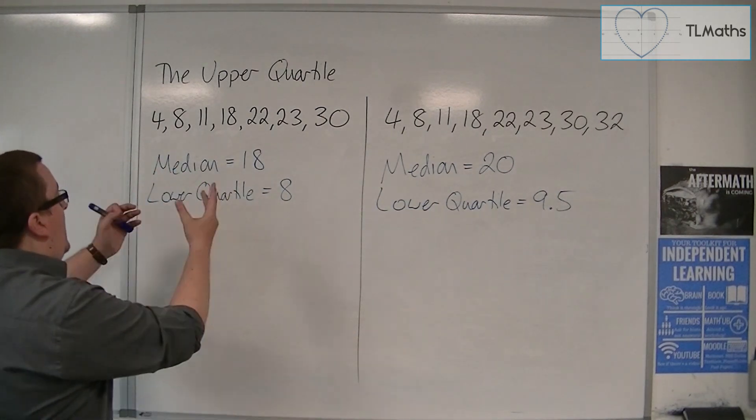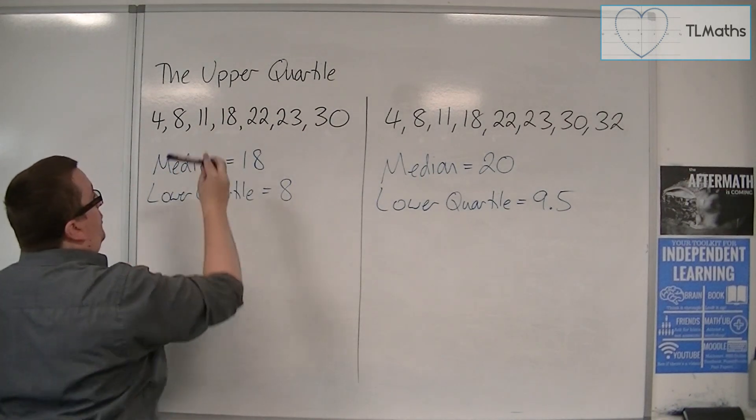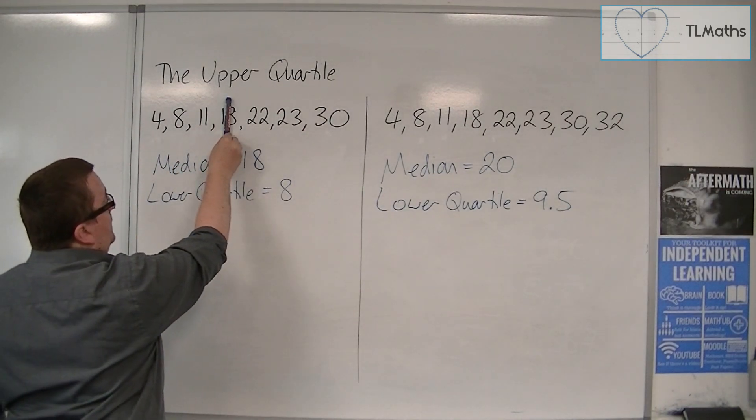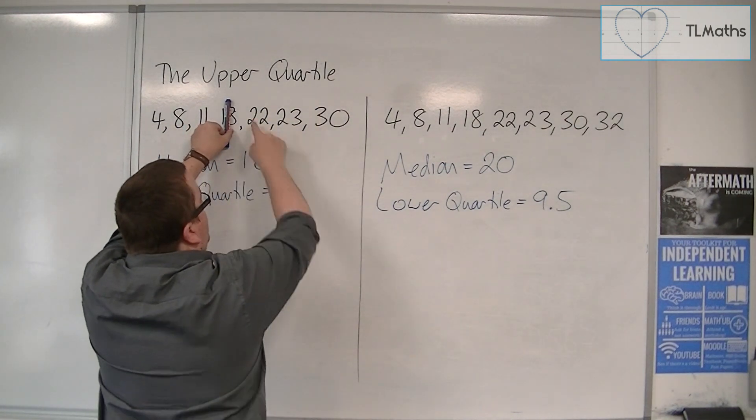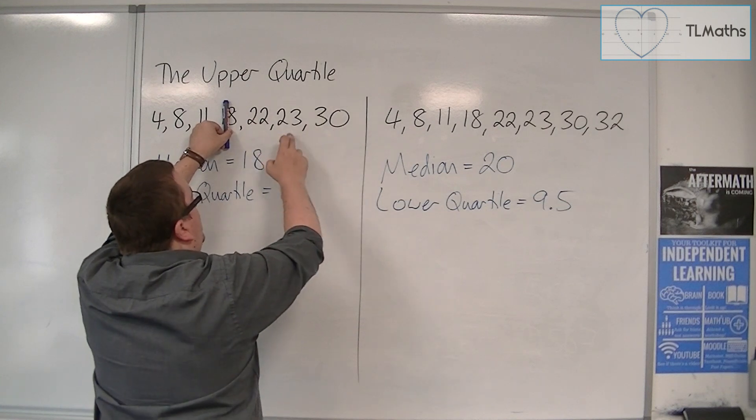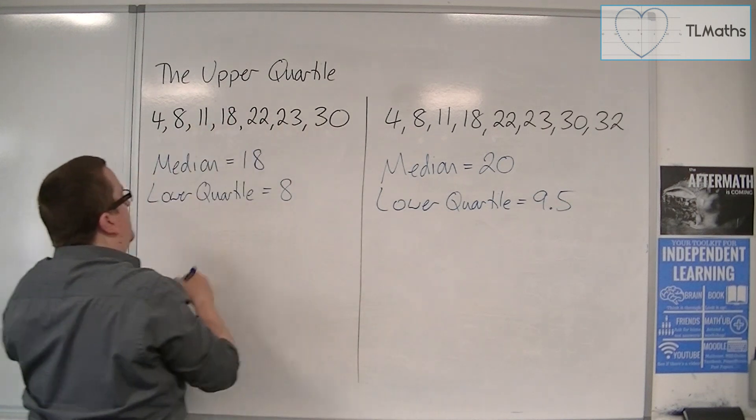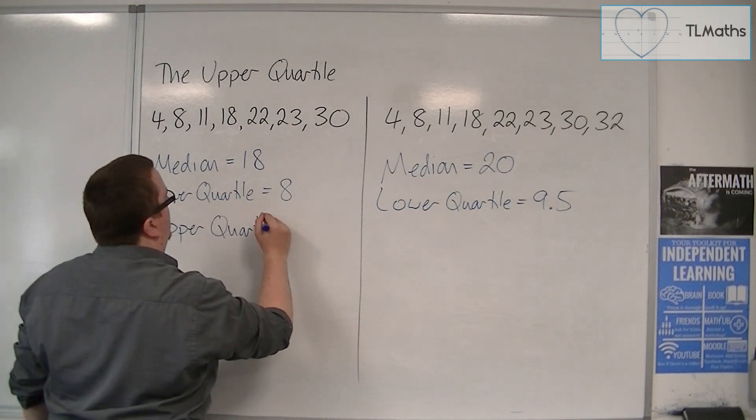So when we have seven numbers, the median was the 18. So what we do is we ignore the number 18, and now you're finding the median of the second half of the data set. And so the middle number, which in this case is the 23, so the upper quartile is the 23.